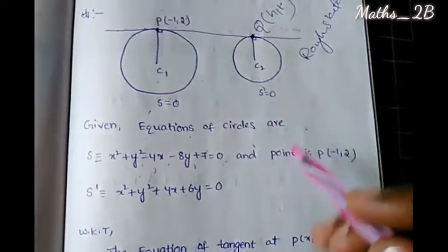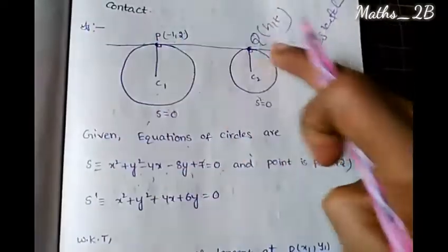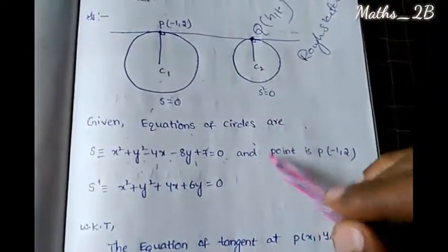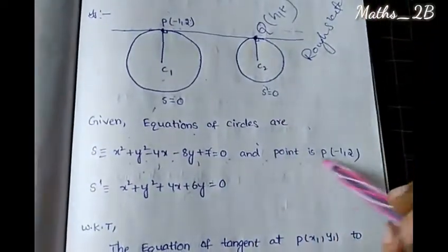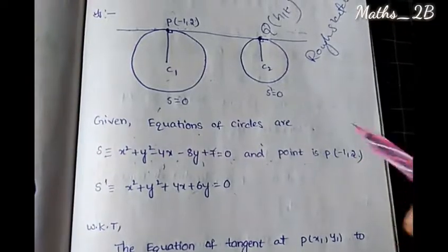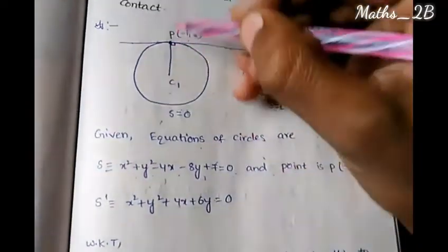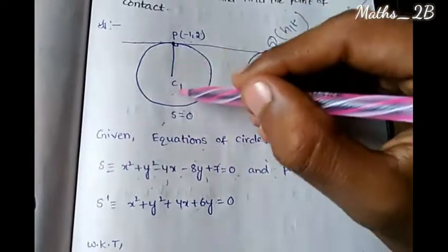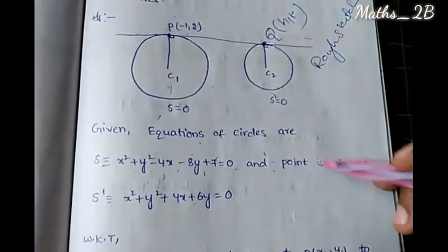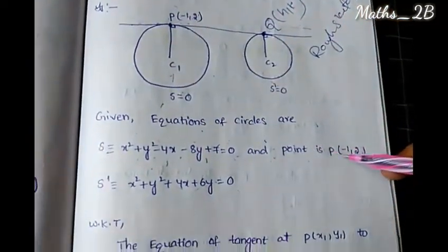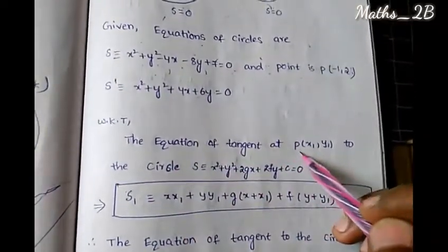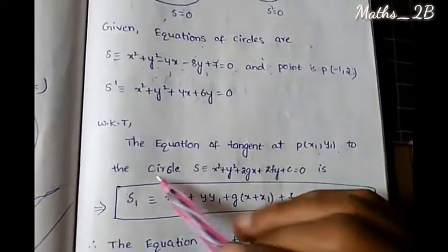I will show you the tangent in the two circles and find the point of contact. The tangent is a point of contact. The point P is at minus 1, 2. The equation of tangent at P of x1, y1 to the circle is given by the formula.